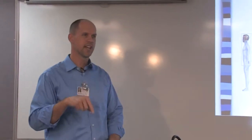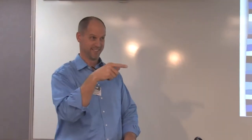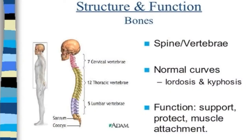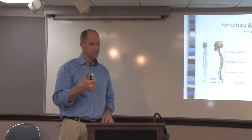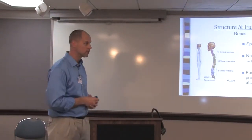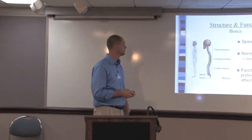What do we call the curvature to the side of the spine? Scoliosis — thank you. The basic function of the bone structure is to support and also to protect — protect the nerves, the nervous system — and also for muscle attachment for movement.